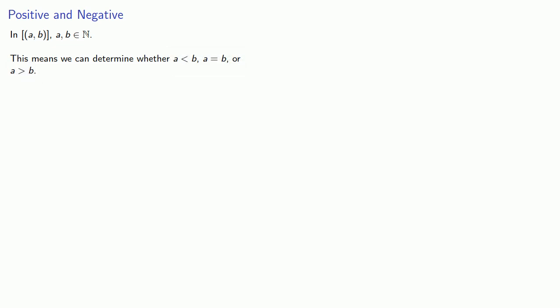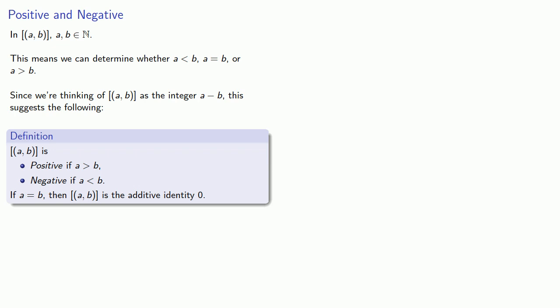Since we're thinking of this equivalence class as the integer A minus B, the equivalence class AB is going to be called positive if A is greater than B, negative if A is less than B, and if A and B happen to be the same thing, this equivalence class is just the additive identity zero. Remember we showed that a little earlier.